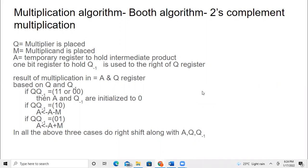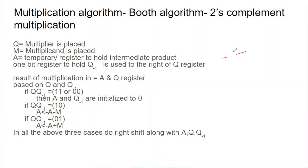In the previous video we saw the unsigned multiplication algorithm. Now we are going to see Booth's algorithm, which is mainly for signed multiplication. When you have a sign, you consider both positive and negative numbers. When multiplying minus by minus, the answer is positive. When both are positive, the answer is also positive. When one number is negative and another is positive, the answer will be negative. This is the basic rule of multiplication that applies here.